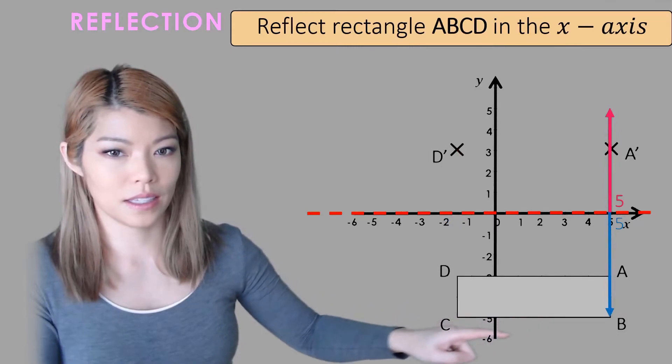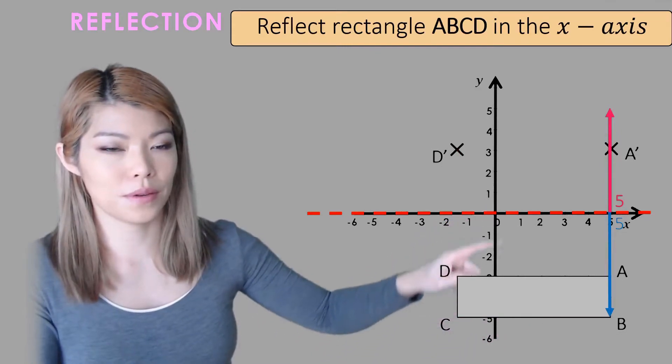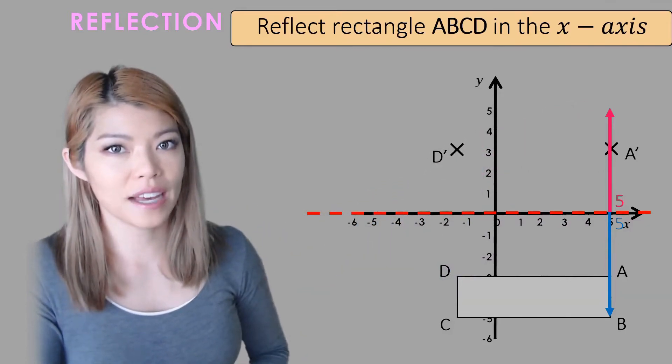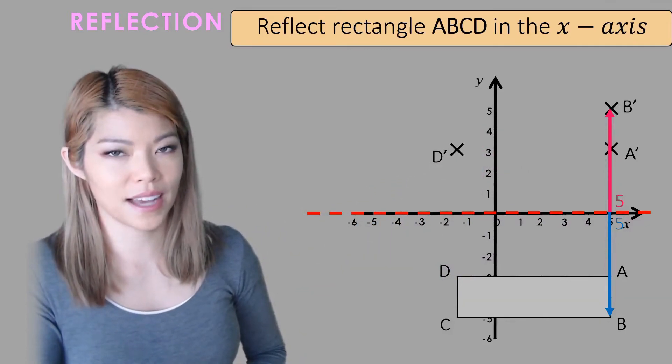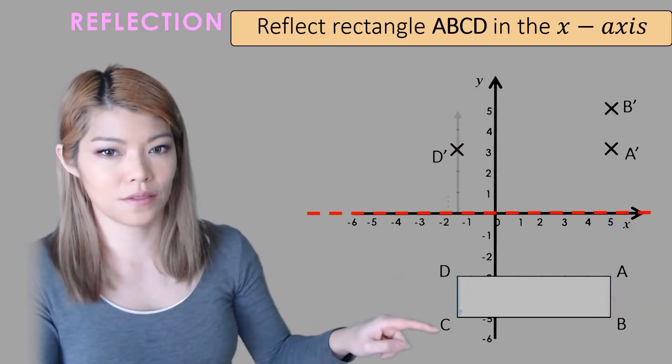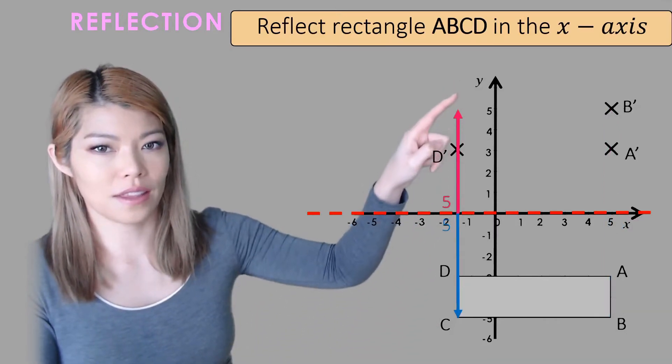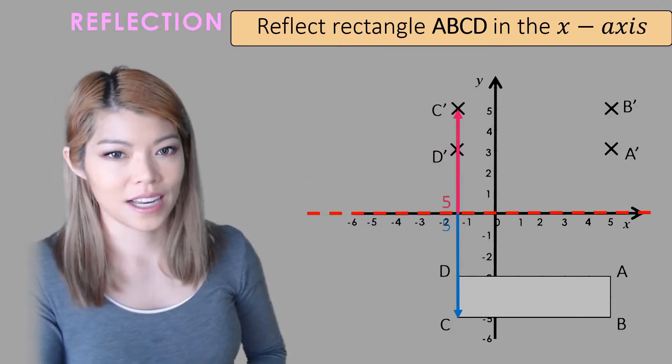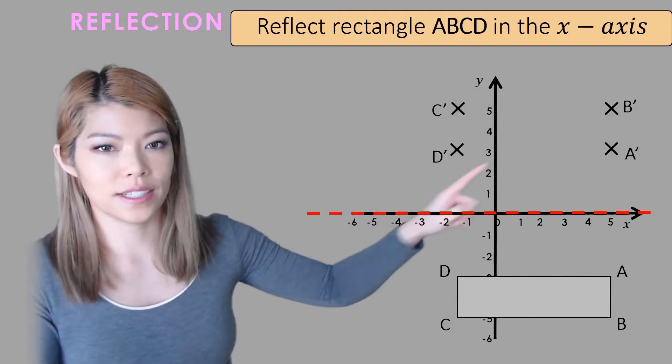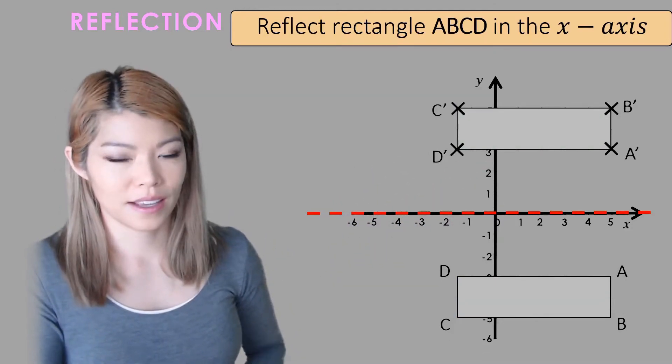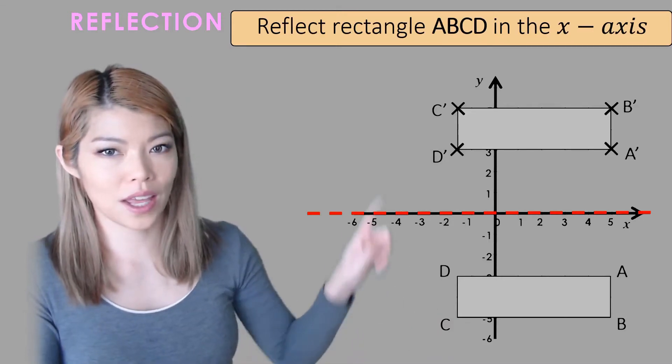And then the next point we'll do B. So B is five away from the mirror or the x-axis. So we're going to find a spot five away on the other side and label that as B'. We'll do the same for C. So again it's five away. So on the other side it will be up there and we'll label that as C'. Now we can join all four vertices and get our new rectangle or our image. So that's the object we started with and that's the image.